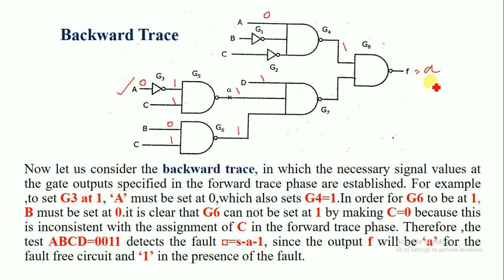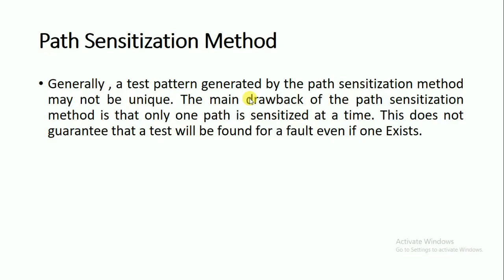In the presence of the fault, the output of gate G5 is always 1. By using the forward and backward trace methods in path sensitization, we can trace the path. Generally, a test pattern generated by the path sensitization method may not be unique. The main drawback of this method is that only one path is sensitized at a time.